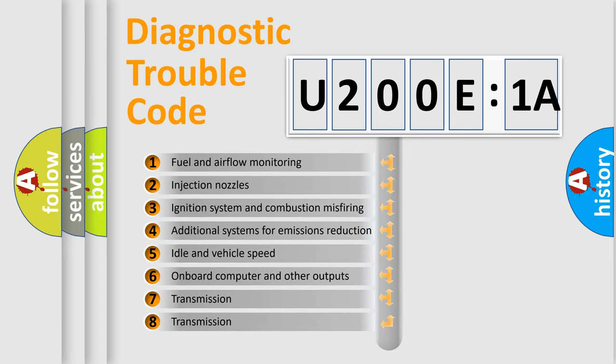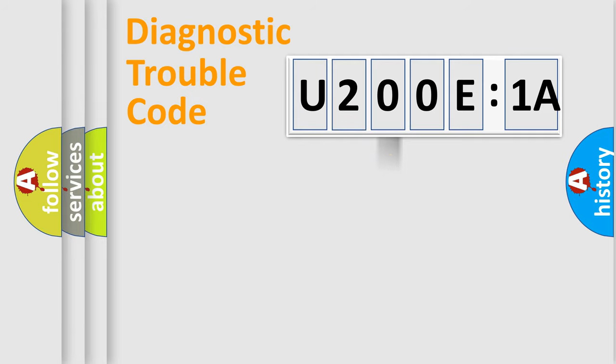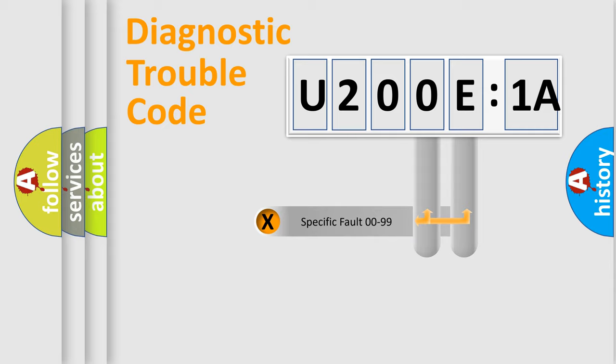The third character specifies a subset of errors. The distribution shown is valid only for the standardized DTC code. Only the last two characters define the specific fault of the group.